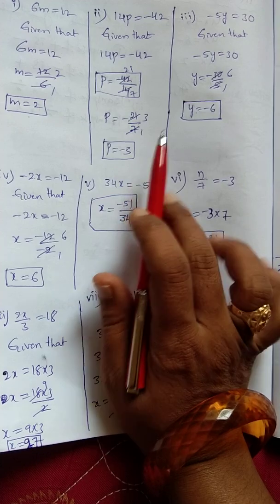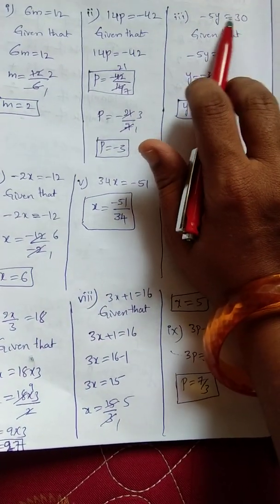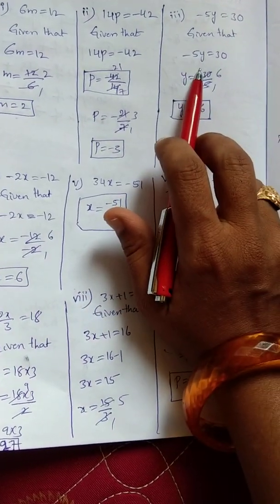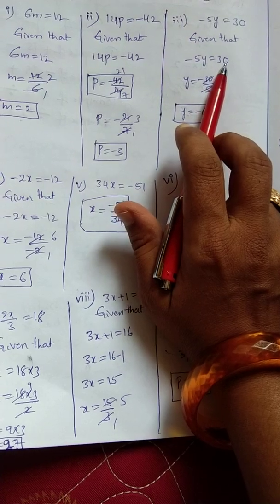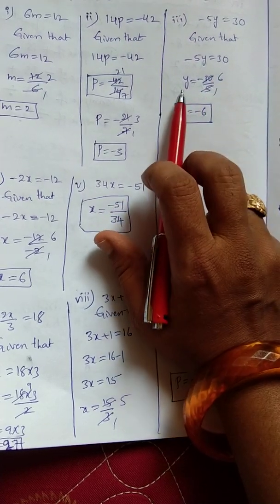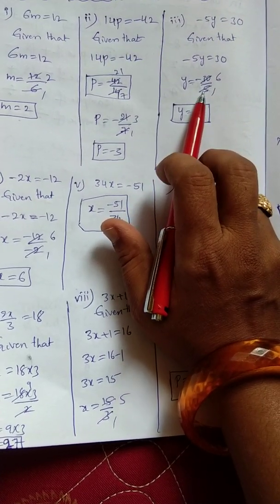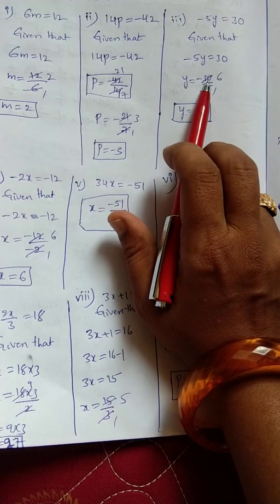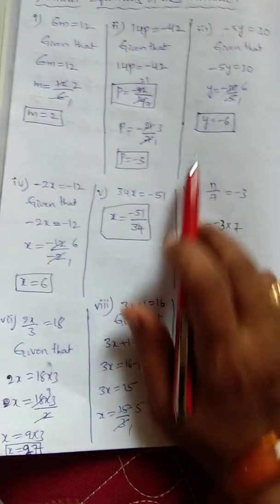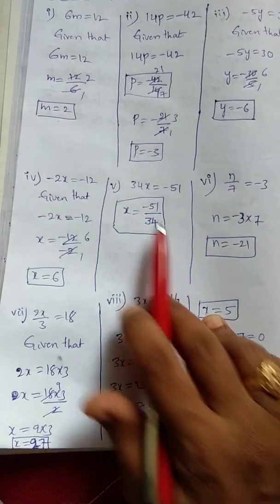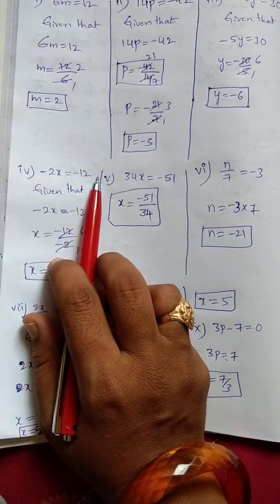Next, minus 5y equals 30. That means y equals 30 by 5. 5 ones are 5, 5 sixes are 30, so y equals minus 6.